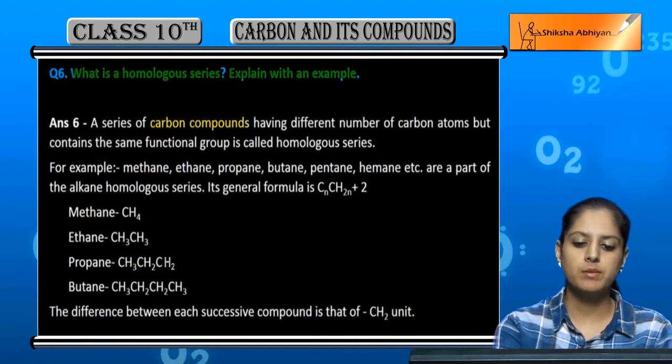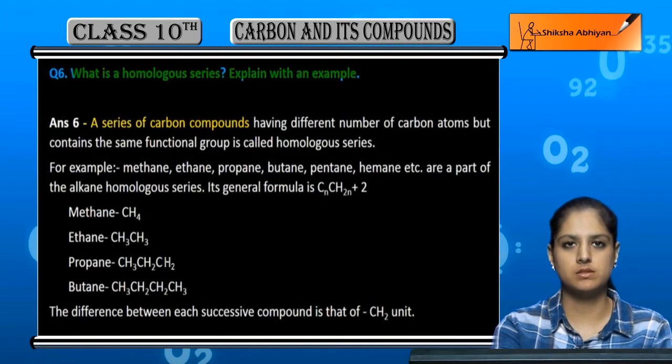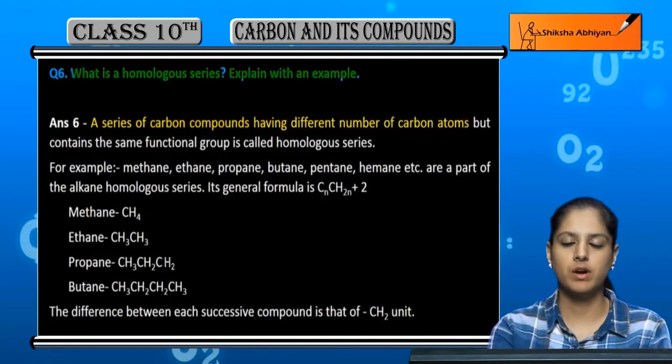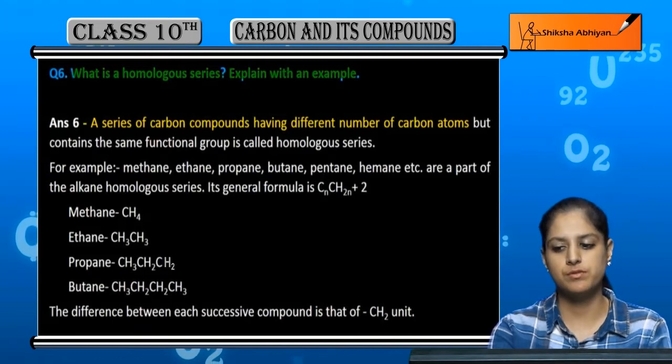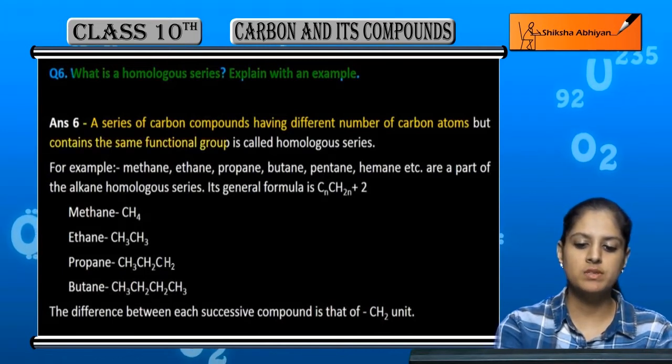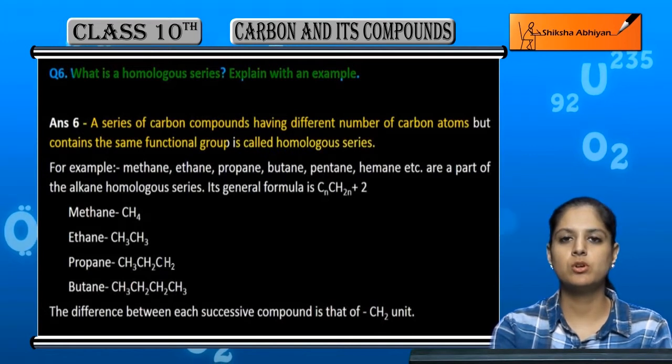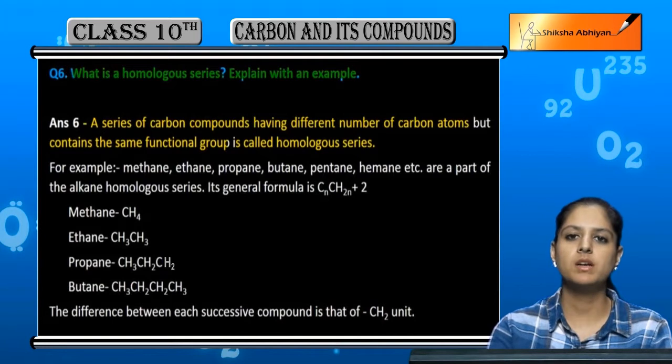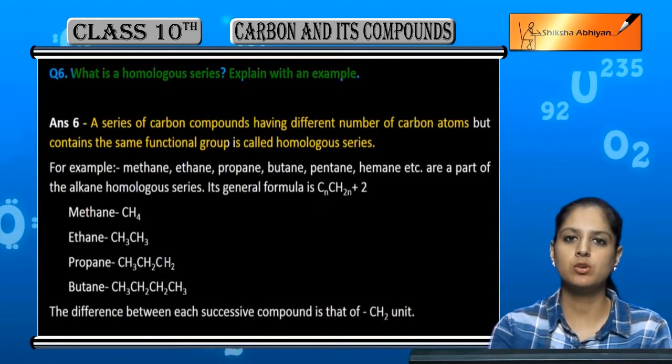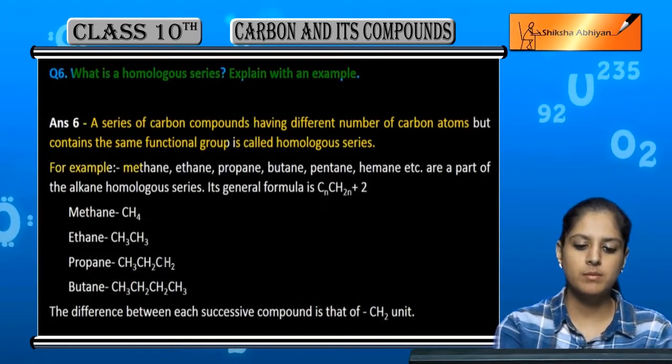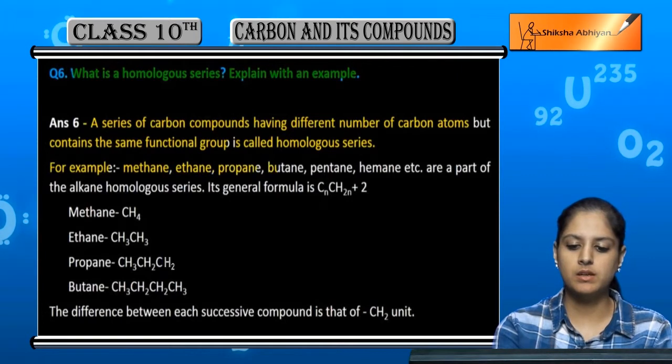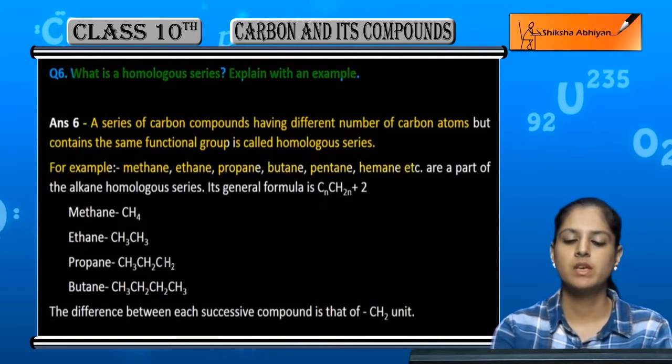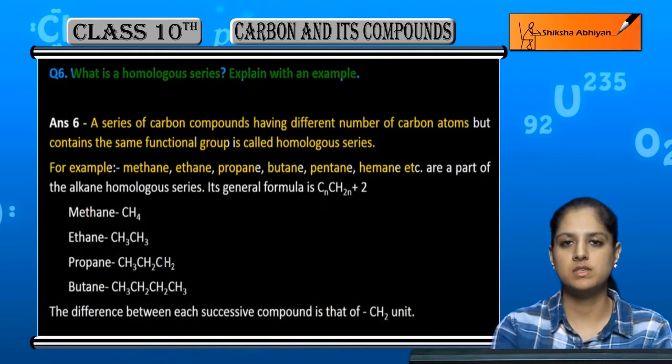A series of carbon compounds which have different numbers of carbon atoms, 1, 2, 3, 4 carbon atoms differing, but the same functional group is a homologous series. Different number of carbon atoms but the backbone and functional group is the same. For example, methane, ethane, propane, butane, pentane, hexane, etc. This is a homologous series.